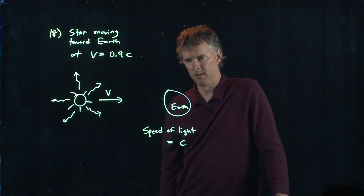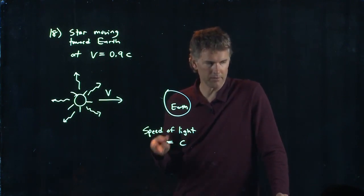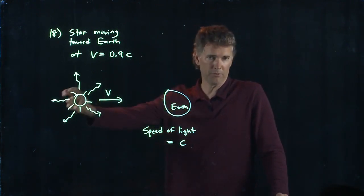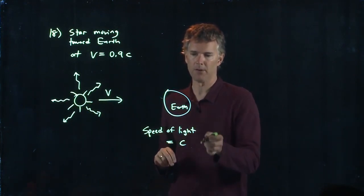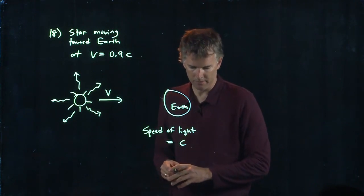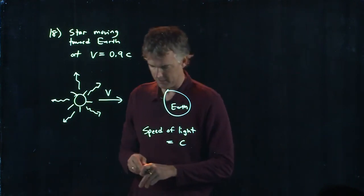Okay, this is the second postulate of the special theory of relativity. No matter what the source is doing or what the observer is doing, you're always going to measure the exact same speed of light, C. Which is one of the answers, answer E.